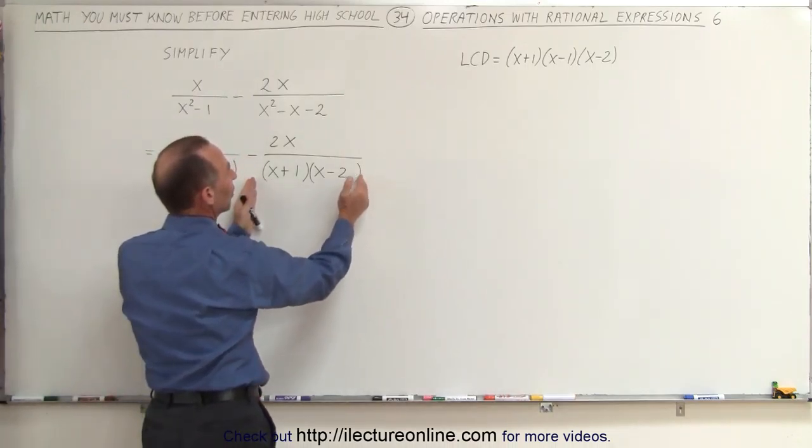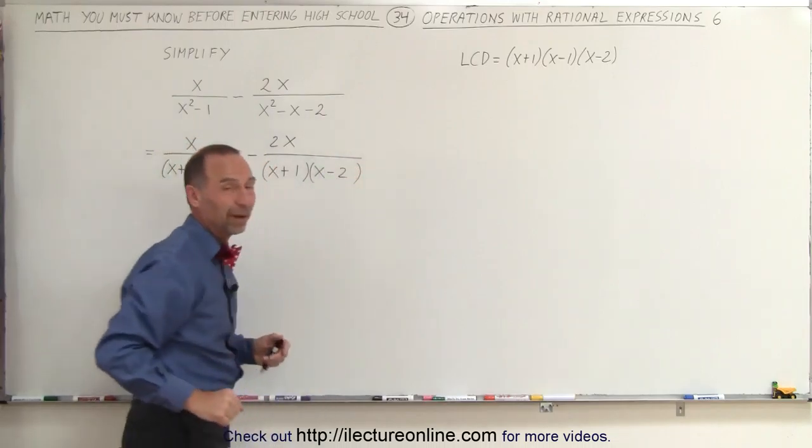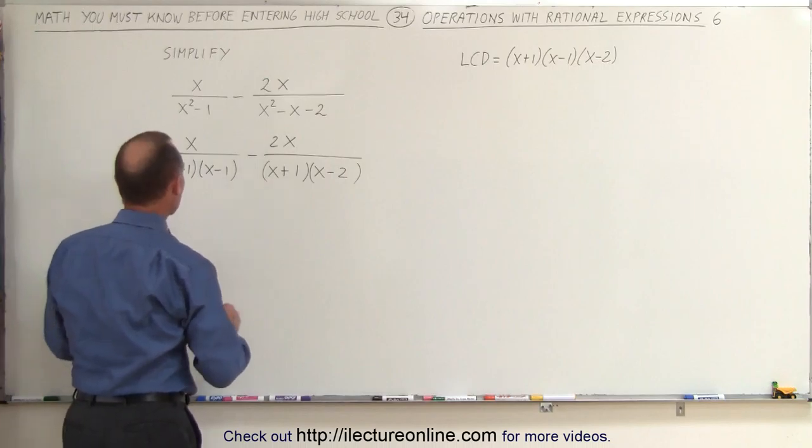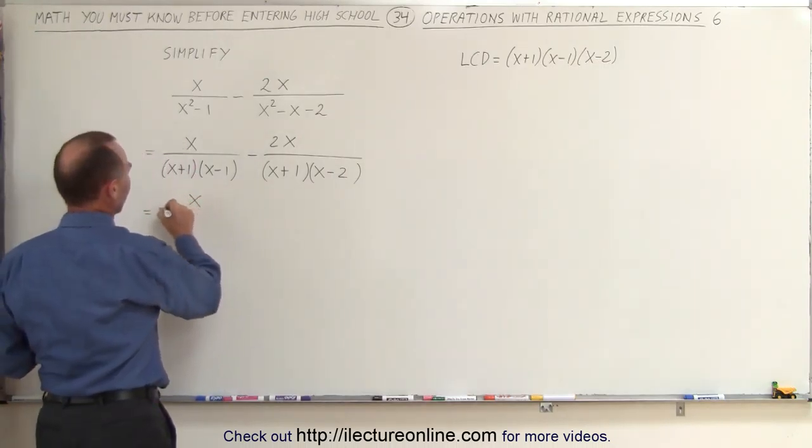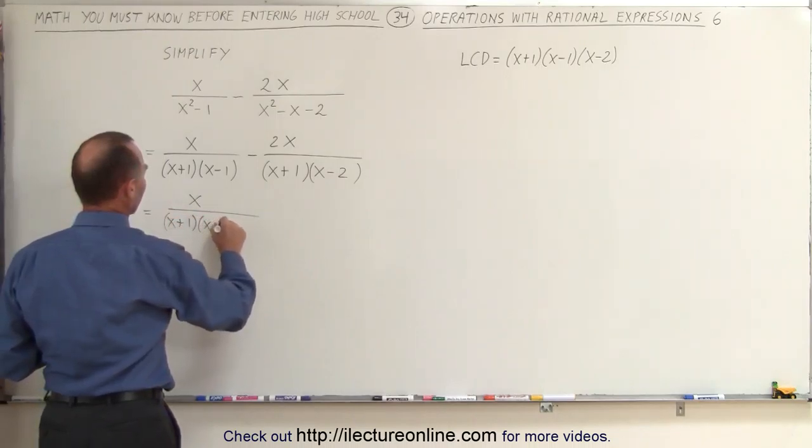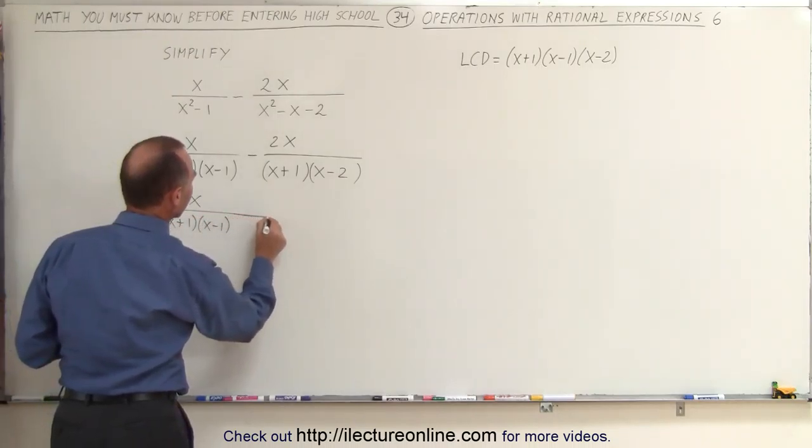So what I'm going to do is I'm going to multiply the left fraction by the one that I'm missing here, the x minus 2. Of course, I have to do both the top and the bottom, numerator and denominator, and here I'm missing an x minus 1, so I'll multiply the numerator and denominator by x minus 1. Let me illustrate what we mean by that.